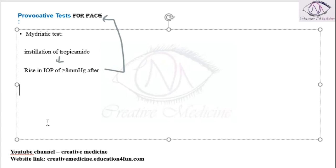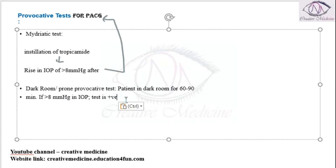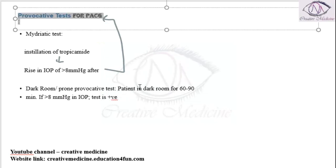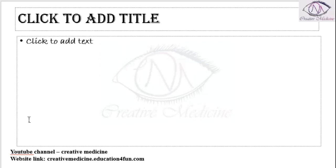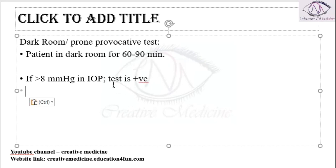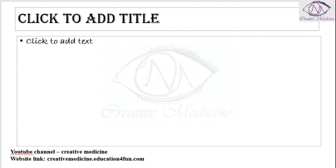The second test is the dark room or prone provocative test. This is also done for primary angle closure glaucoma. In this test, the patient is taken to the dark room for 60 to 90 minutes and then you measure the intraocular pressure. If it is found to be more than 8 mmHg, then the test is positive, meaning primary angle closure glaucoma is present.